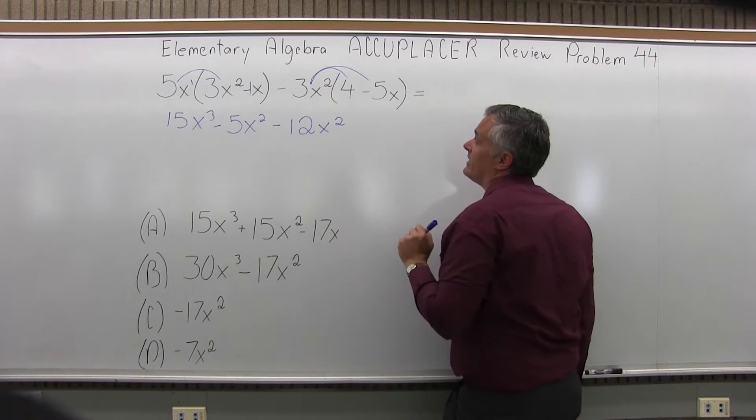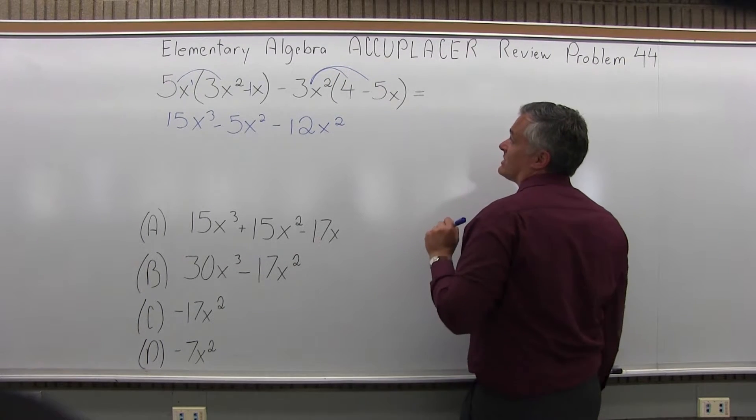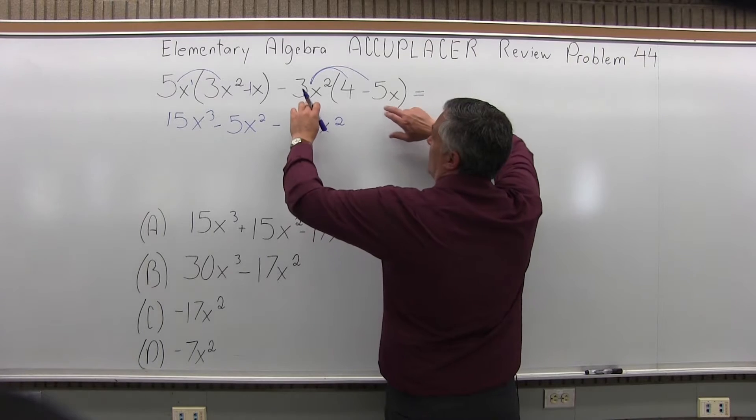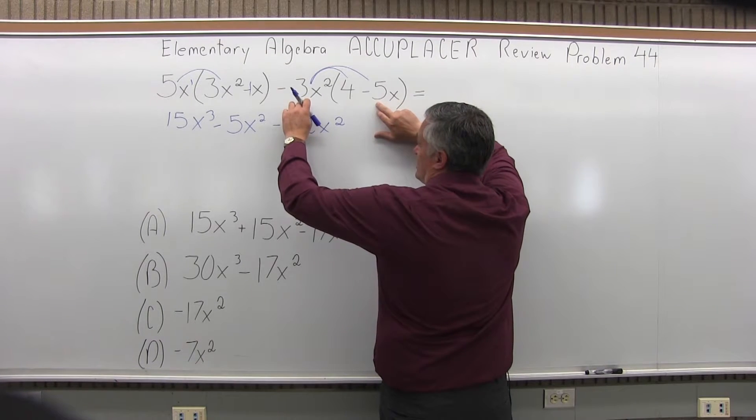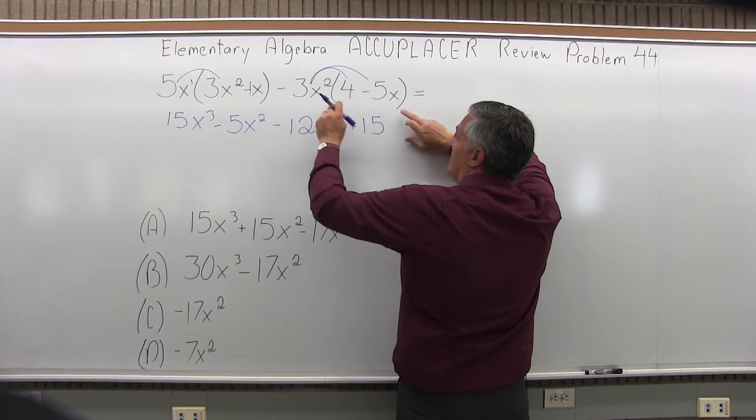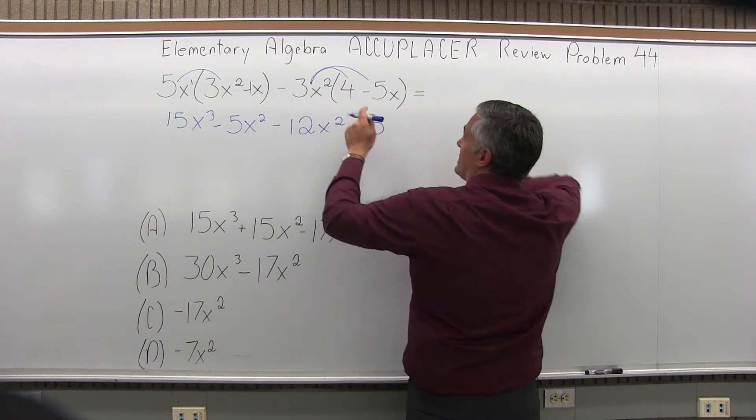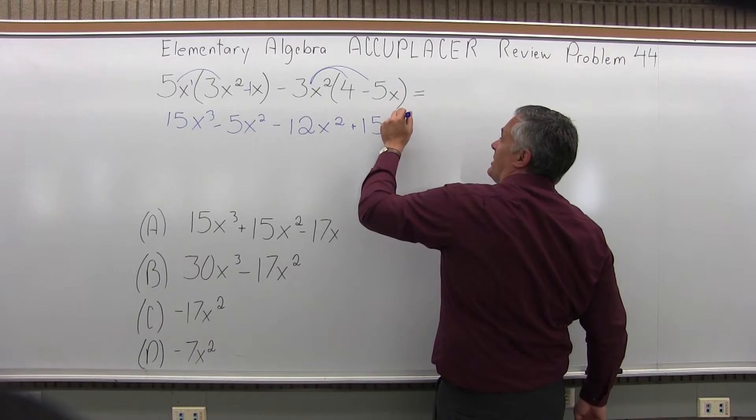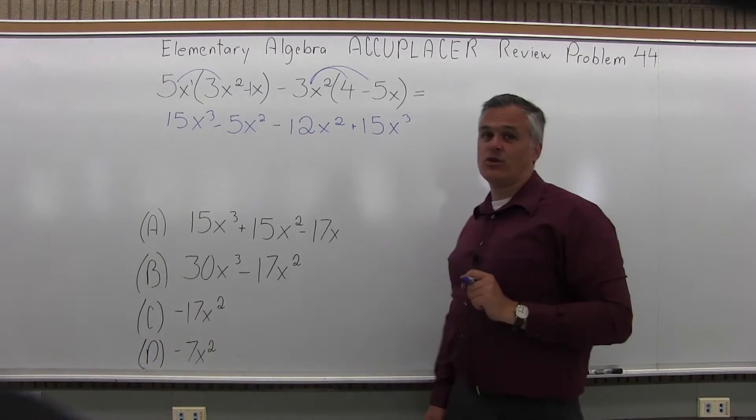And finally, minus 3x squared times minus 5x to the first. So focus on just the numbers initially. So negative 3 times negative 5 will be positive 15. And now the x's, x squared times an x to the first will be x to the third. So I get a 15x to the third.